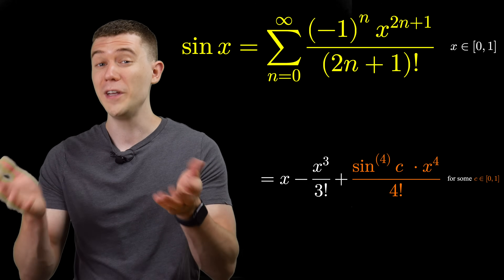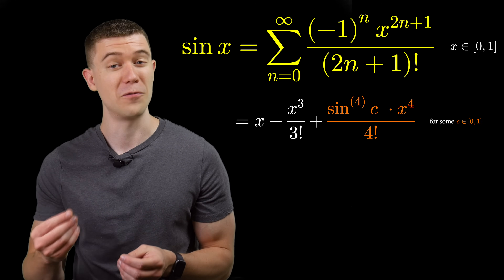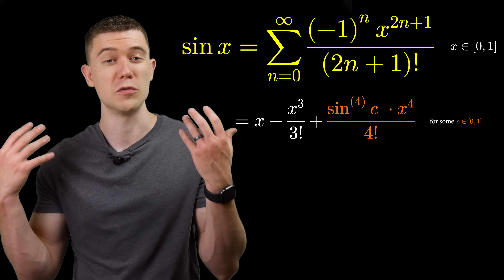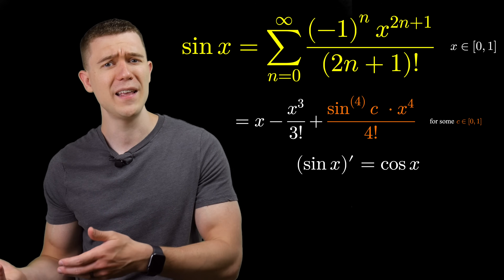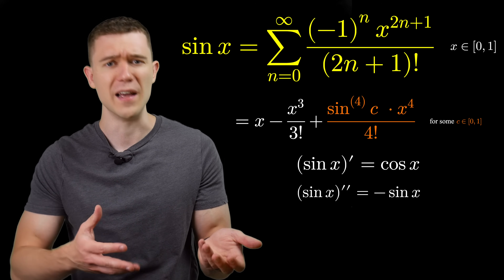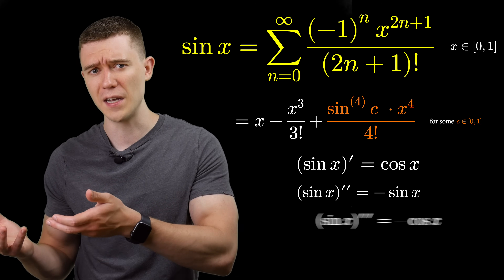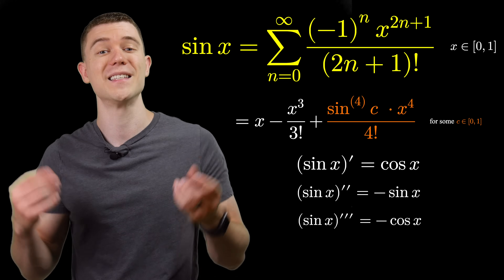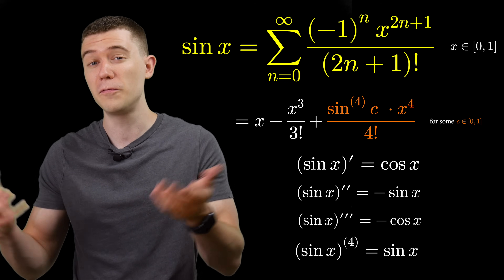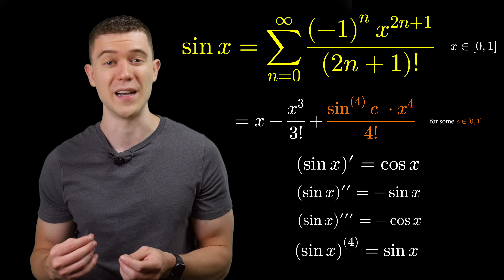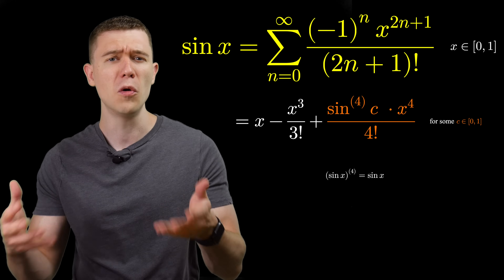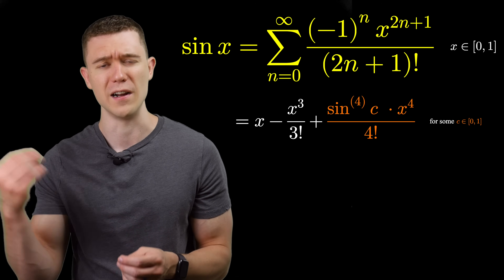Fortunately, we know how to take four derivatives of sine x. The first derivative is cosine, then negative sine, then negative cosine, then positive sine once again. So the fourth derivative of sine x is simply sine x — or in this case, sine of c.